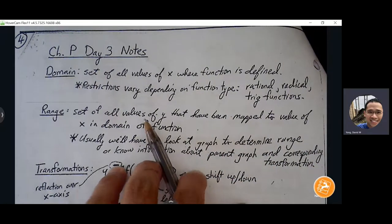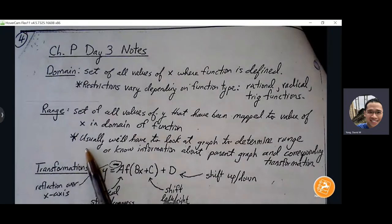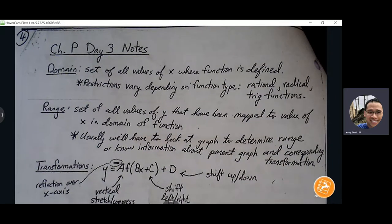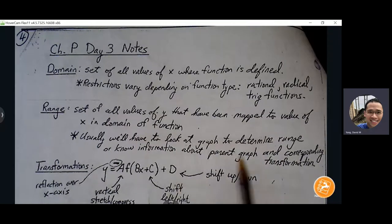Range is the set of all the y-values that exist for the graph. With range, it's a little bit more difficult to figure out algebraically without looking at the graph. Typically we need to look at what the picture of the graph is before we can determine the range. But sometimes, using transformations and knowledge about parent graphs, we're able to determine how far high and how far low the graph stretches.